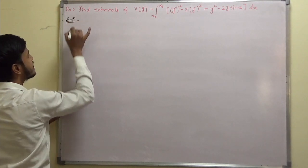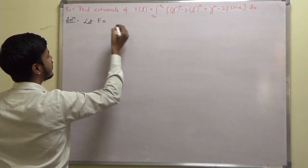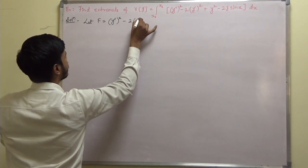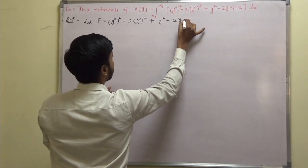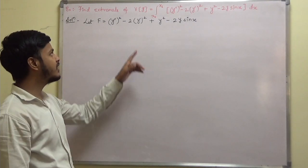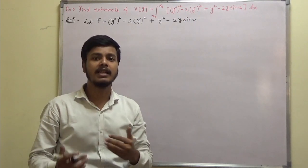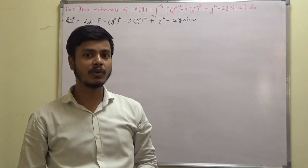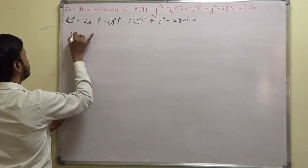What is given to us: the functional f is equal to y-double-dash squared minus 2 y-dash squared plus y squared minus 2y sine x. This is the functional we have, and as you can see the higher order derivative involved is y-double-dash. So I need to write down the Euler equation: ∂f/∂y minus d/dx of ∂f/∂y-dash plus d²/dx² of ∂f/∂y-double-dash equals zero.